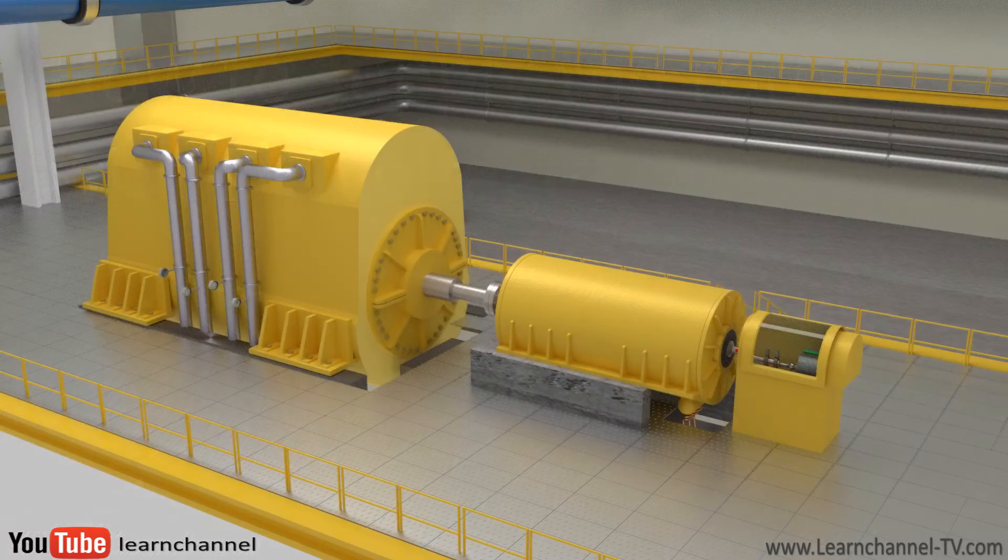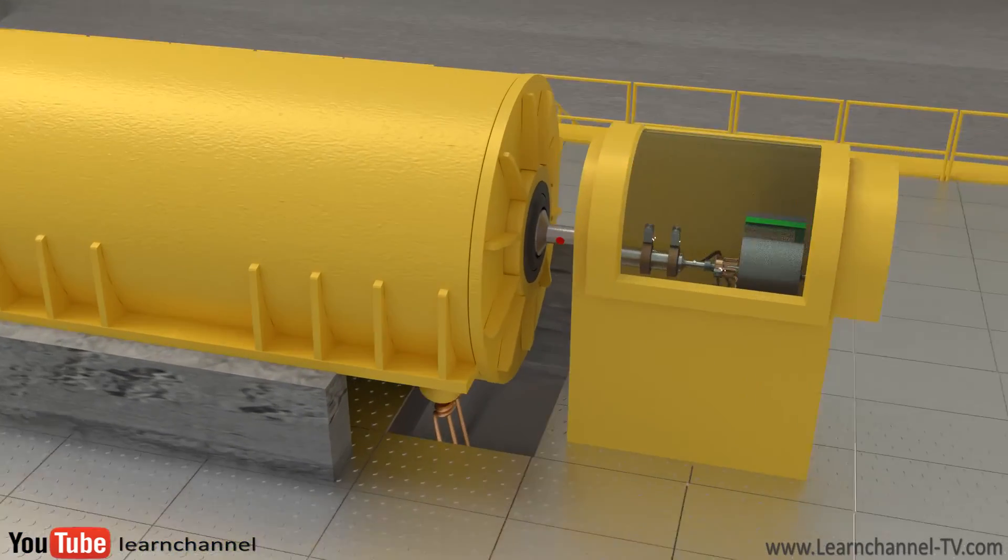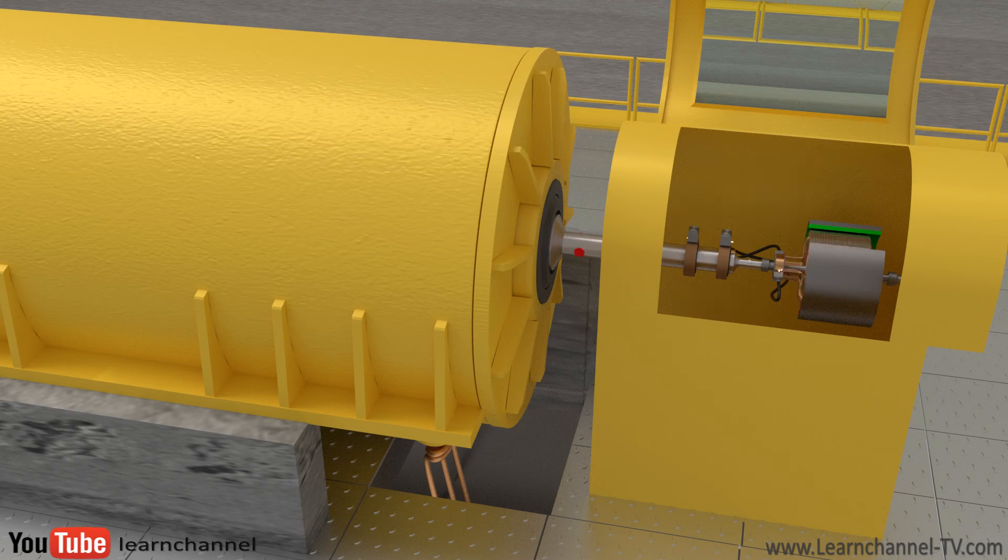The rotor is supplied with DC power via sliding contacts. There are two possibilities to get this DC voltage, either from an external DC power source or via a DC voltage generator, which rotates along with the common shaft, as you see here. Therefore, our generator can be classified as self-excited.